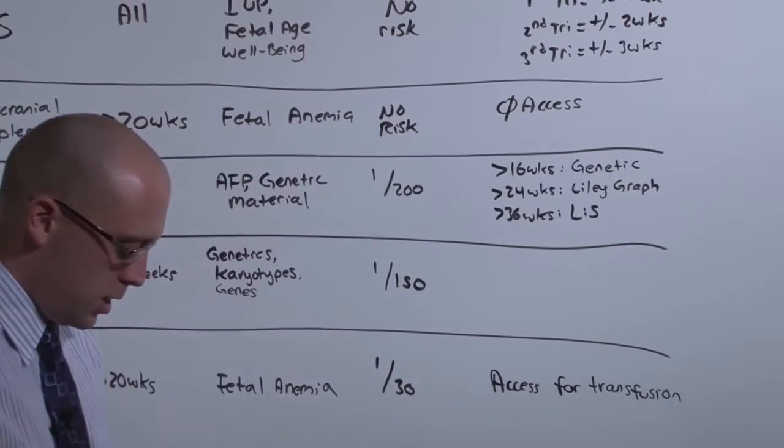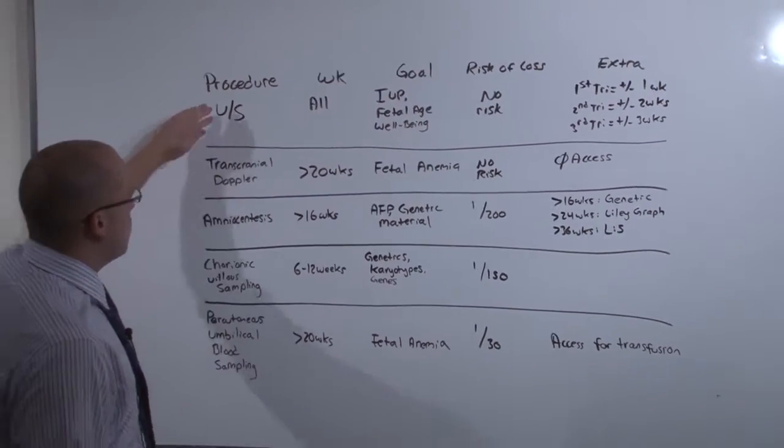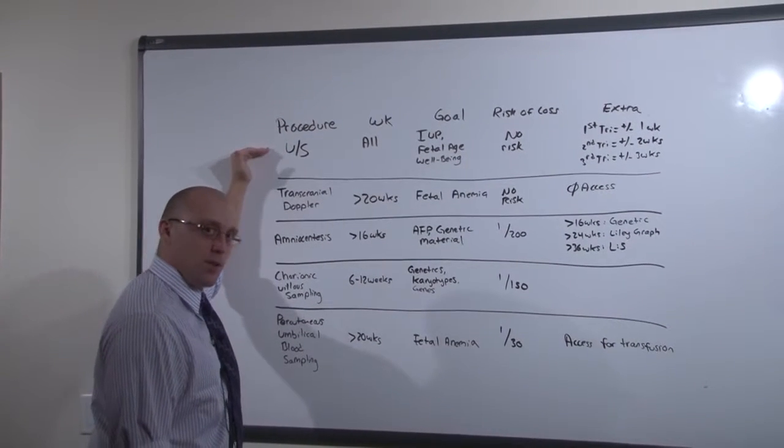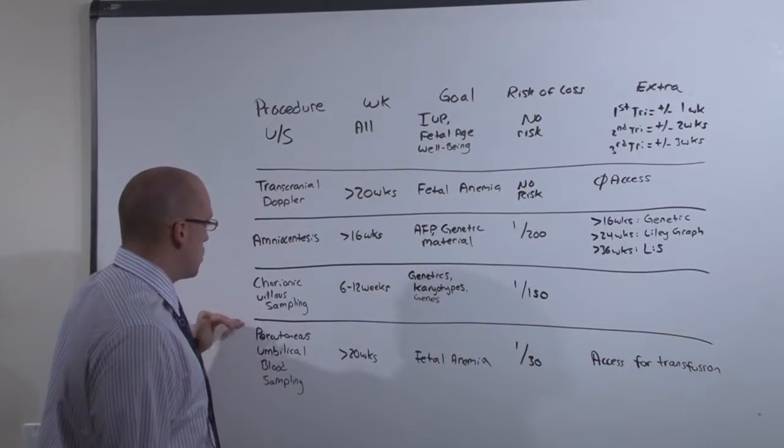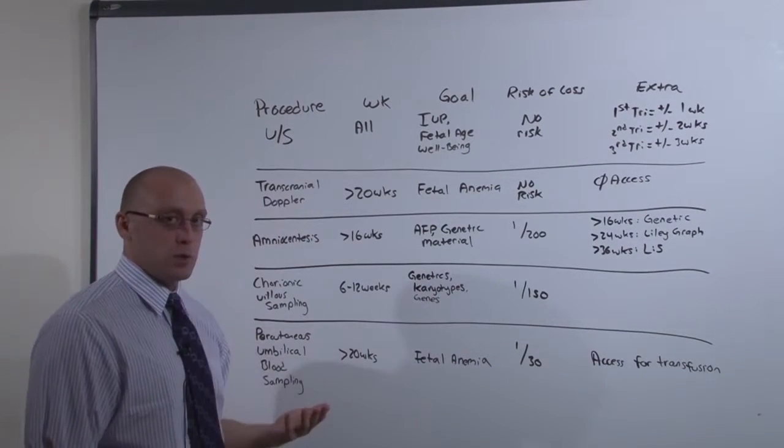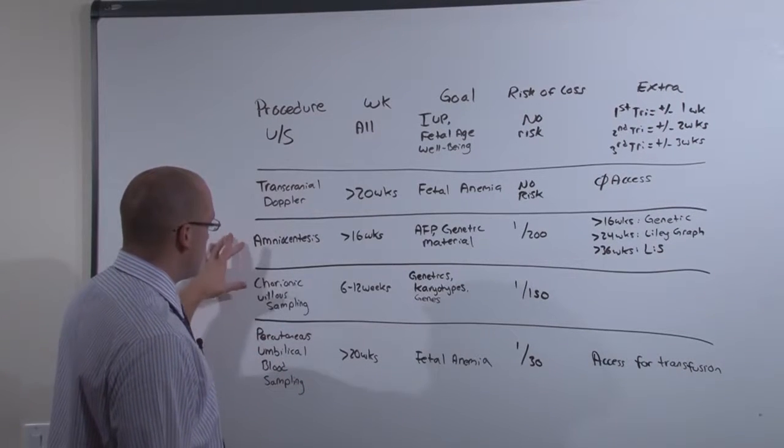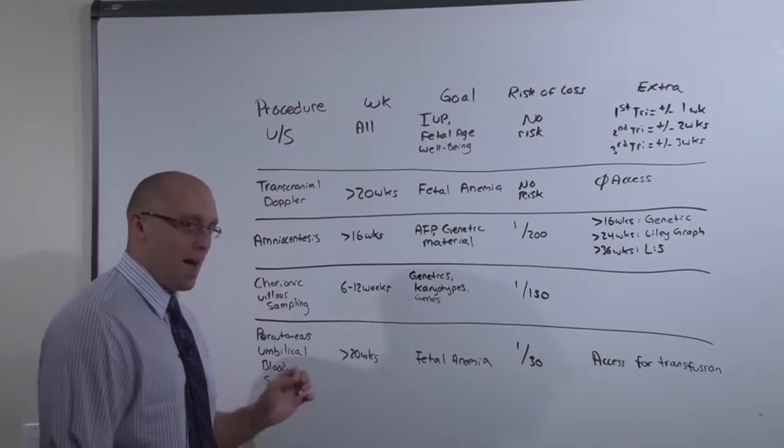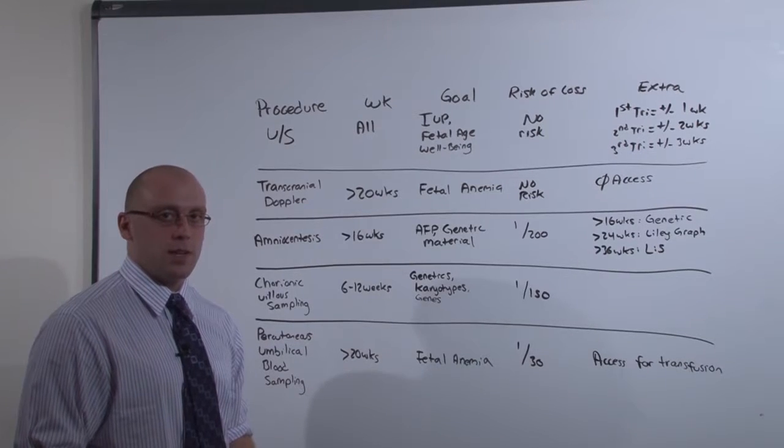So I want you to recognize that these procedures are not done on every patient every time. The ultrasound is the only one you can use regularly and is included because you're going to see this test in essentially every lecture in OB. I want you to be familiar with these procedures because you're going to see them from time to time throughout these OB-GYN lectures. Recognizing that amniocentesis, chorionic villus sampling, and percutaneous umbilical blood sampling are dangerous but have their intended use.